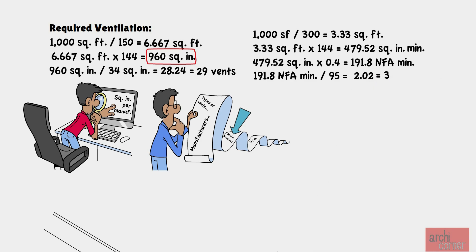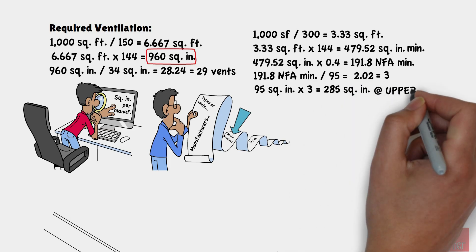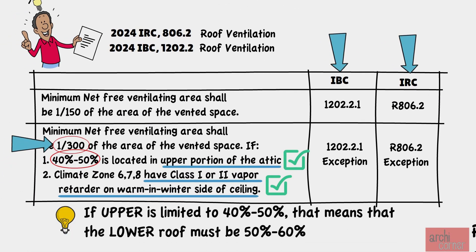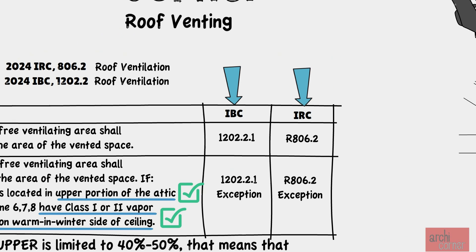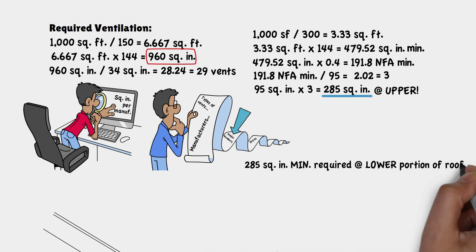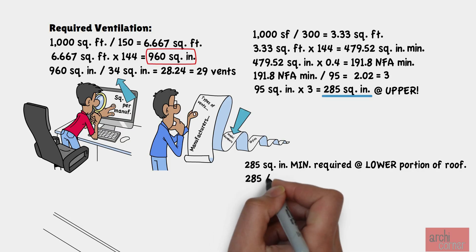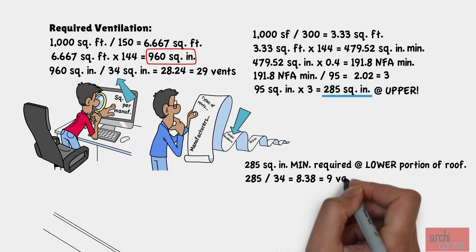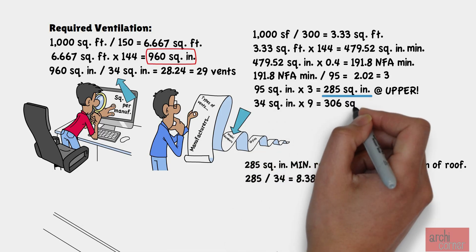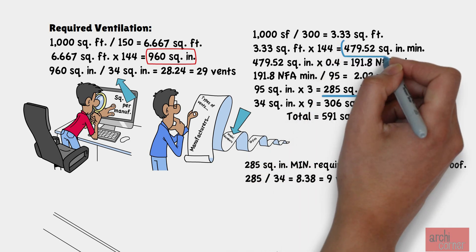Unfortunately, this will require three wind turbines. Three turbines times 95 square inches gives us 285 square inches of net free area from the turbines. We also need to get a minimum of 50% of airflow from the lower portion of the roof, so we must provide at least 285 square inches with eave vents. Dividing 285 by 34 equals 8.38, requiring 9 eave vents. Nine vents times 34 square inches equals 306 square inches of venting from under-eave vents, for a total of 591 square inches.